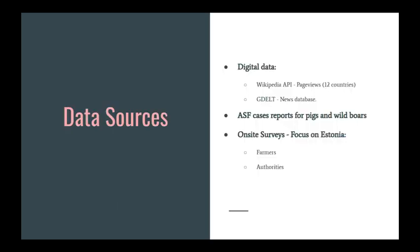Focusing on the data sources, we consider three main sources. On the digital side, we use Wikipedia page views for 12 countries as a proxy of information-seeking behavior. We also consider news volume about African swine fever as a proxy of information exposure, and compare the digital data with time series of case reports for African swine fever. On the traditional surveillance data side, we use on-site surveys focusing on Estonia, targeting farmers and authorities.